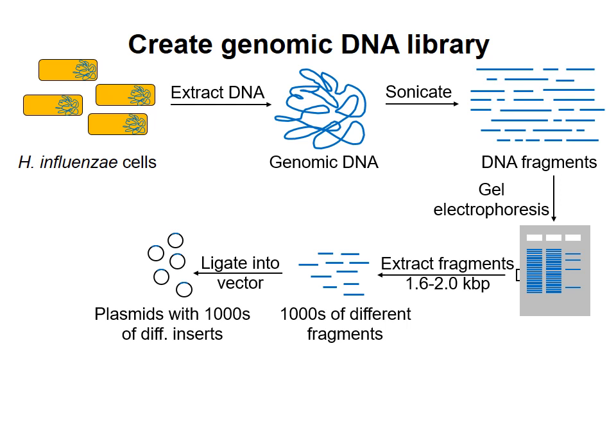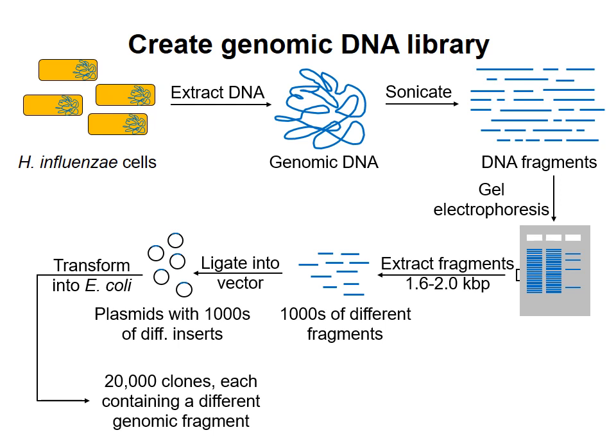They then ligated the DNA fragments into a vector to create a collection of circular plasmids, each plasmid containing a different piece of DNA. This collection of vectors containing different genomic inserts is the genomic DNA library. They transformed these plasmids into E. coli and obtained about 20,000 clones, each clone containing a plasmid with a different genomic insert. The E. coli clones can be grown separately and stored in a freezer such that any plasmid in the library can be easily duplicated by growth of that stored bacterial culture.